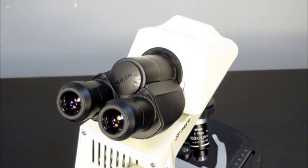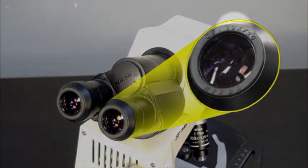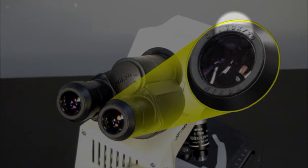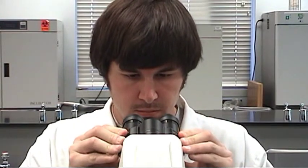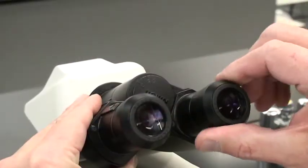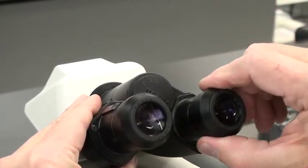The oculars increase image magnification by 10 times or 10x as indicated by the markings. They can be swiveled to match the interpupillary distance between your eyes and adjusted to compensate for differences in individual vision.